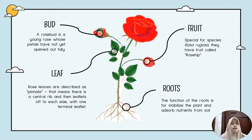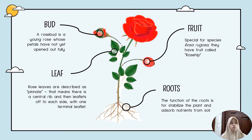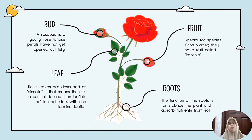The next part of the rose is the bud. A rose bud is a young rose whose petals have not yet opened out fully. The next part of the rose is the fruit. Special for the species Rosa rugosa, they have a fruit called rose hip.